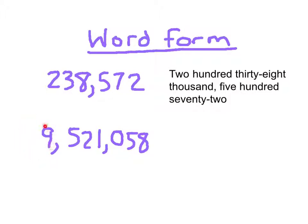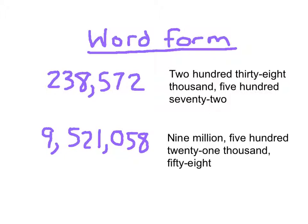The word form for this larger number — we now have a 9 in the millions period. So it's 9,521,000, and then 058 would be pronounced 58. Putting that all together, we get nine million, five hundred twenty-one thousand, fifty-eight. And so that again is the word form of a number.